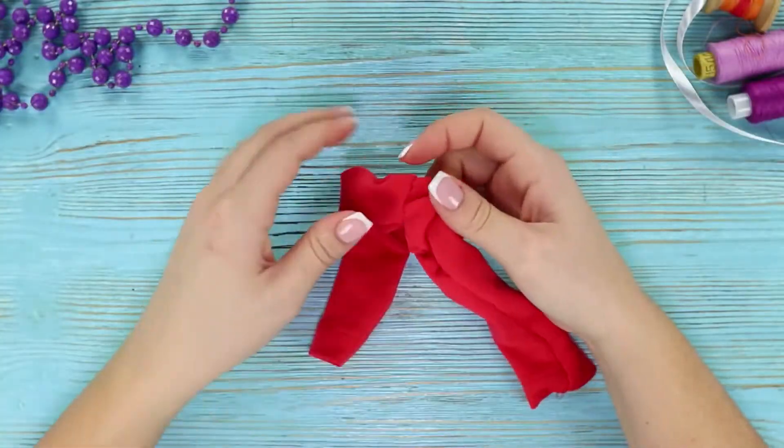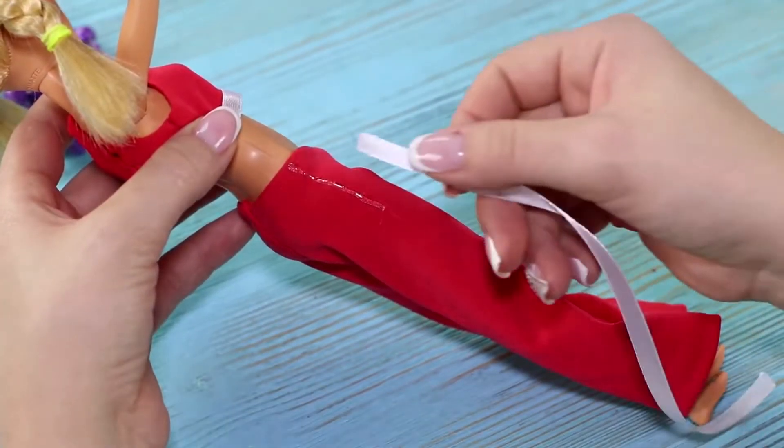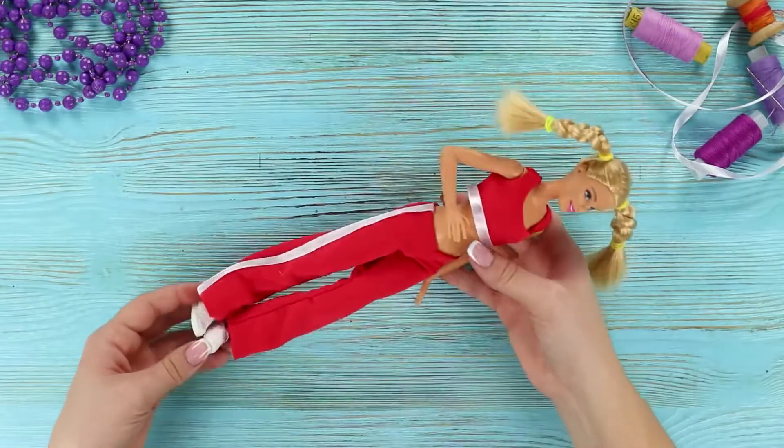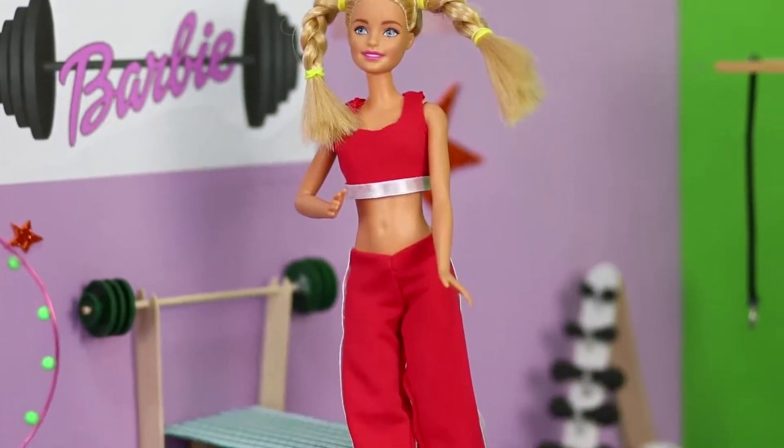Turn the piece inside out. Apply hot glue to the fabric and fasten a silver ribbon stripe. Barbie's sweatpants are just what she needs! The doll will be not only fit, but also stylish!